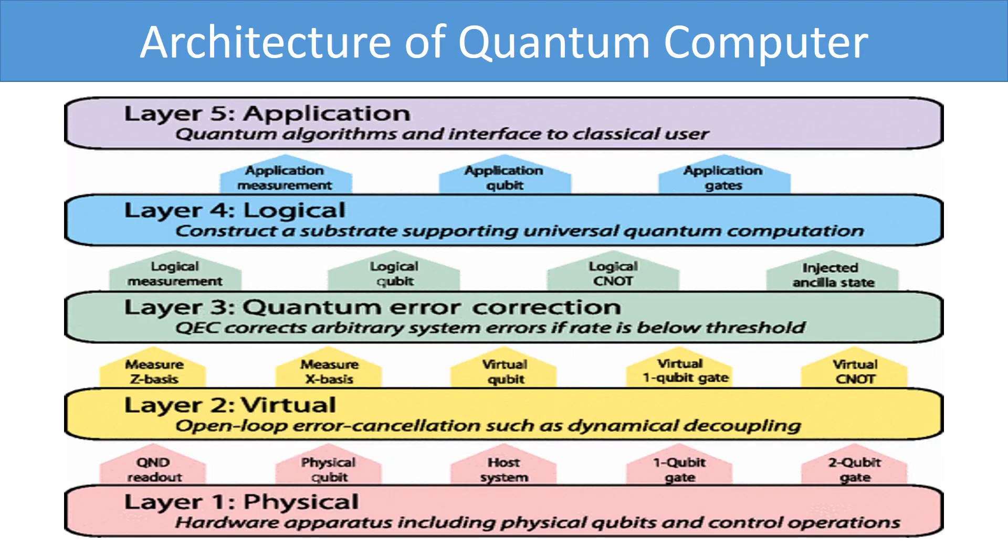The architecture of the quantum computer is a combination of classical and quantum parts and can be divided into five layers where each layer is represented as the functional part of the computer. Application layer: It is not a part of a quantum computer. It is used for representing a user interface, the operating system for a quantum computer, coding environment, etc., that are needed for formulating suitable quantum algorithms. It is hardware independent.